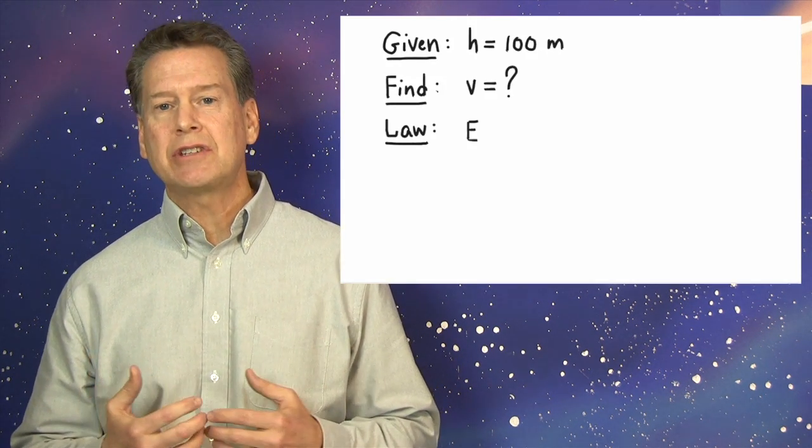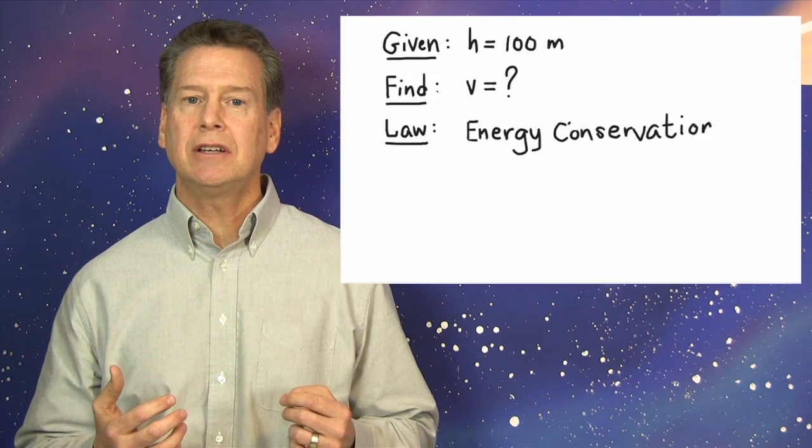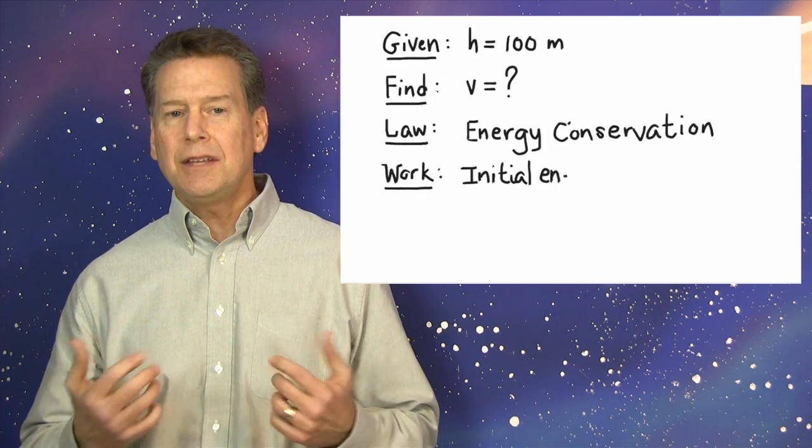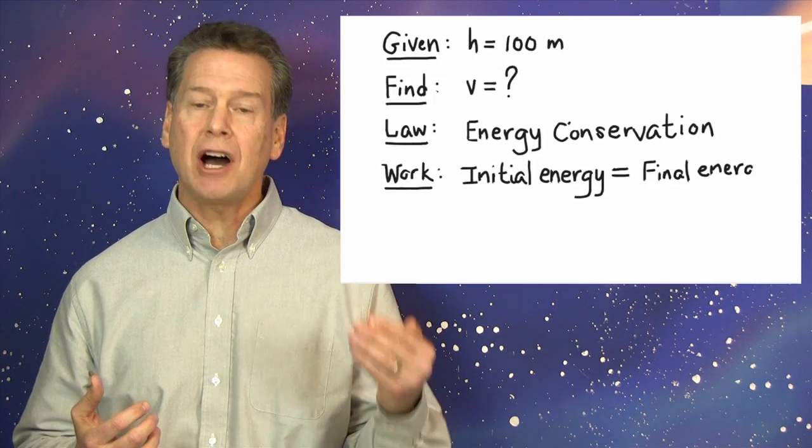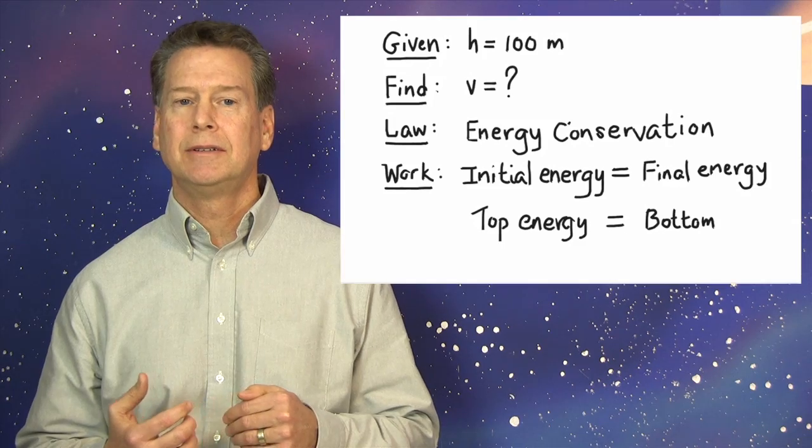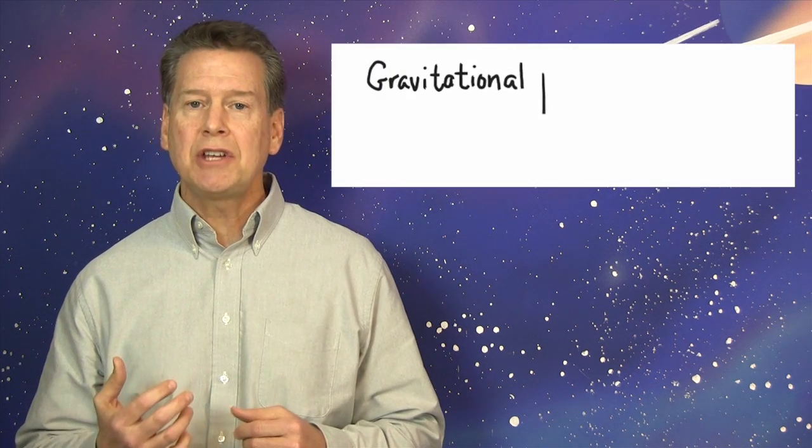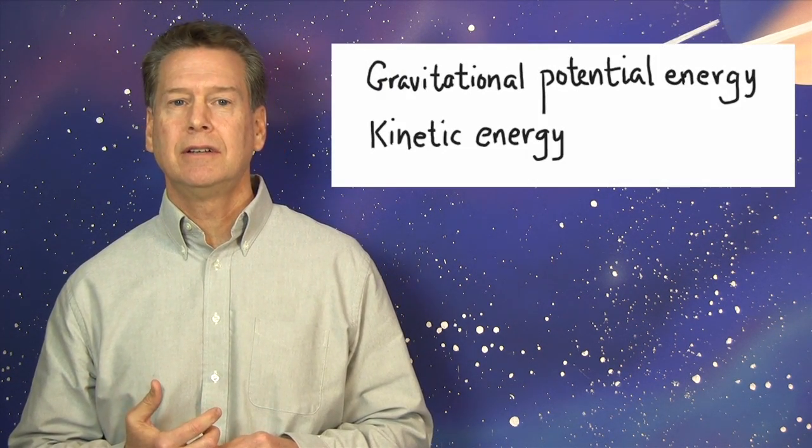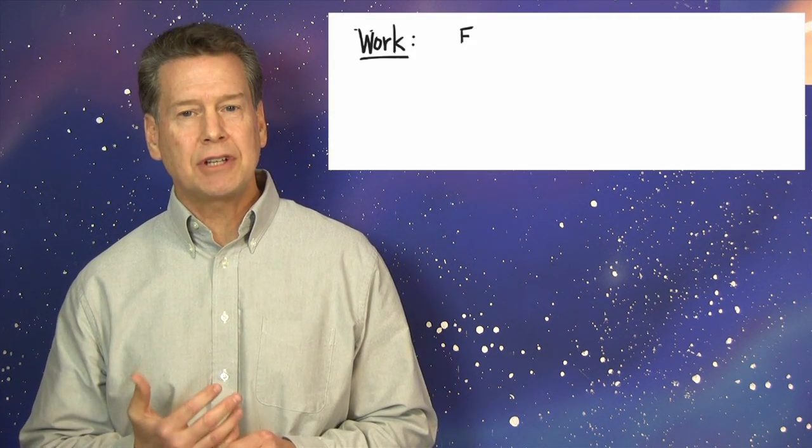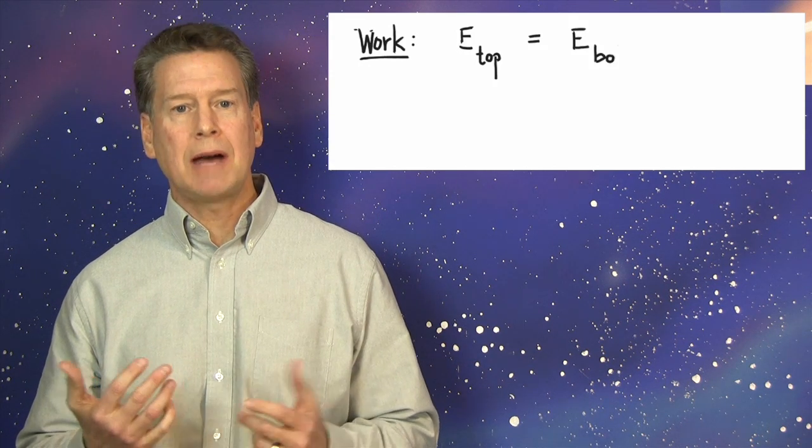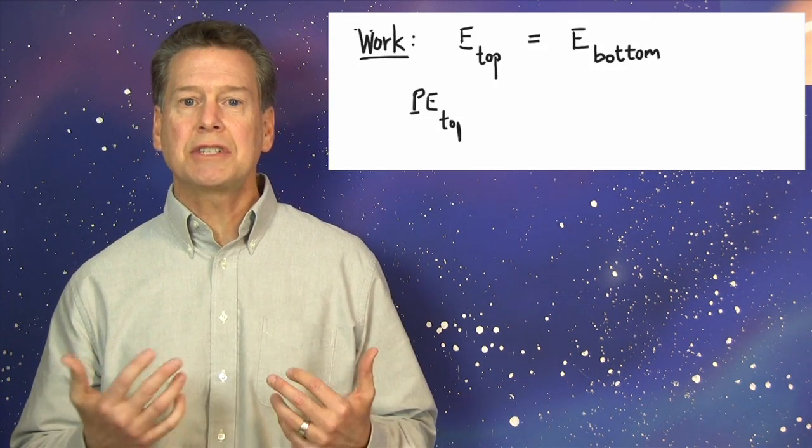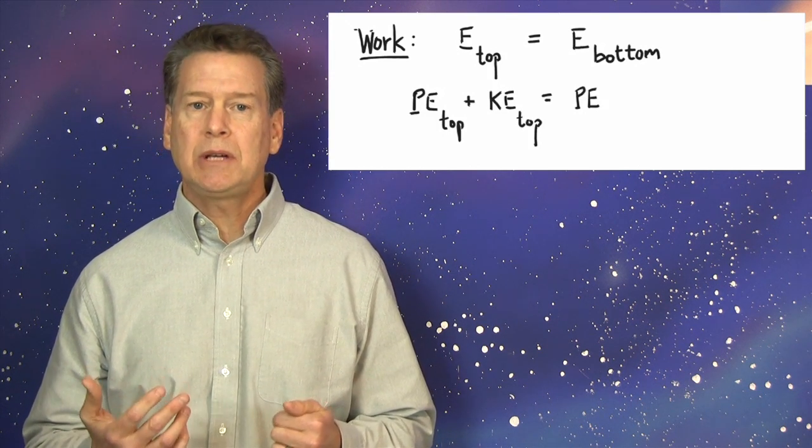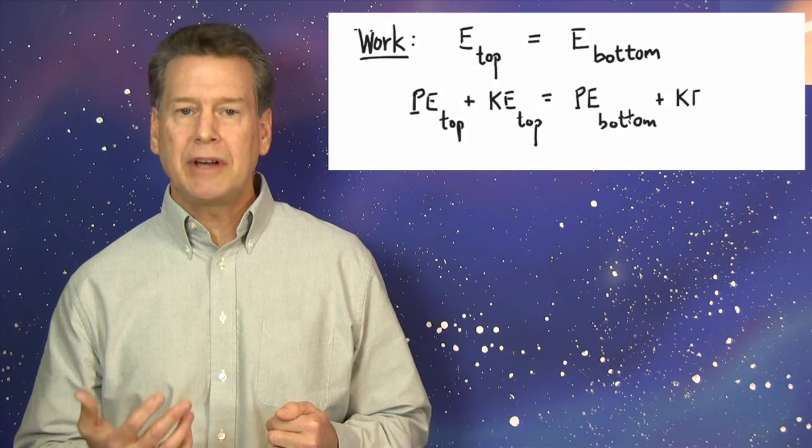The law of energy conservation says that initial energy equals final energy. Here, this means that the energy at the top of the fall equals the energy at the bottom. Fortunately, only two types of energy are involved as the car falls: gravitational potential energy and kinetic energy. Here's the straightforward and crucial translation of these ideas into mathematics. The total energy, capital E, at the top equals the total energy, capital E, at the bottom. Potential energy at the top plus kinetic energy at the top equals potential energy at the bottom plus kinetic energy at the bottom.